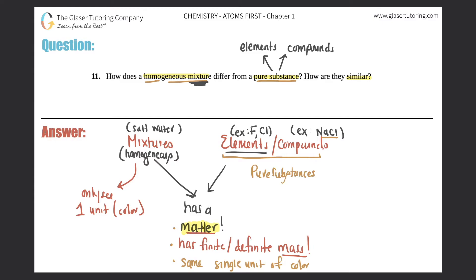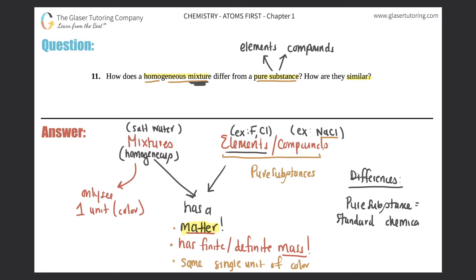Now let's list the differences. The differences are basically about composition. The difference between a homogeneous mixture and a pure substance is that for pure substances, you have a standard chemical composition, whereas for a homogeneous mixture — or any mixture — you have a variable chemical composition.